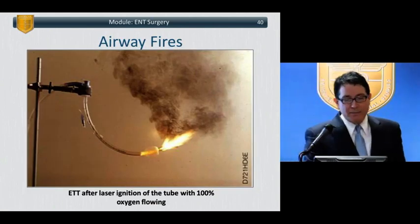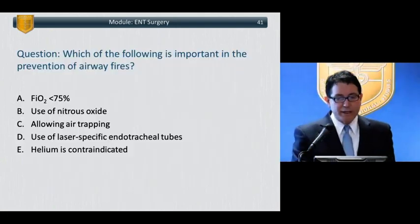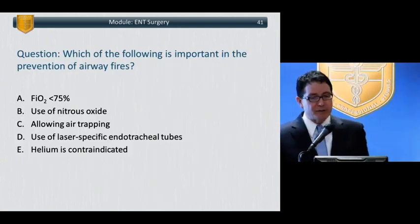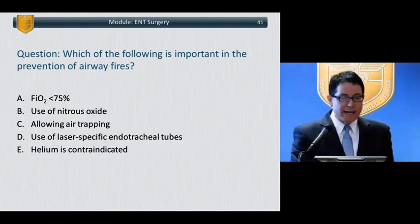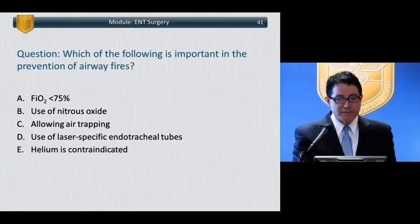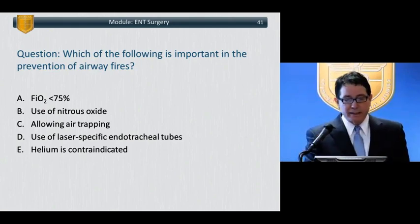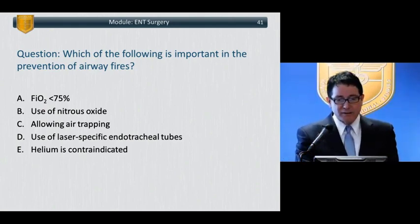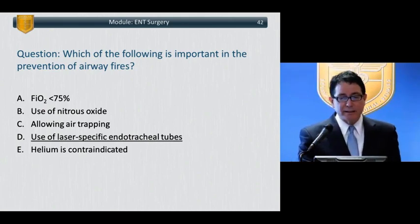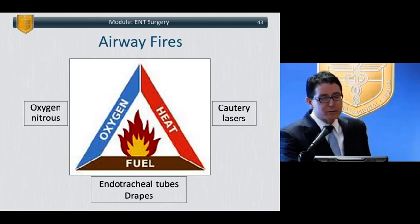Which of the following is important in the prevention of airway fires? A: FiO2 less than 75%. B: Use of nitrous. C: Allowing air trapping. D: Use of laser-specific endotracheal tubes. E: Helium is contraindicated. The correct answer is D — use of laser-specific endotracheal tubes.